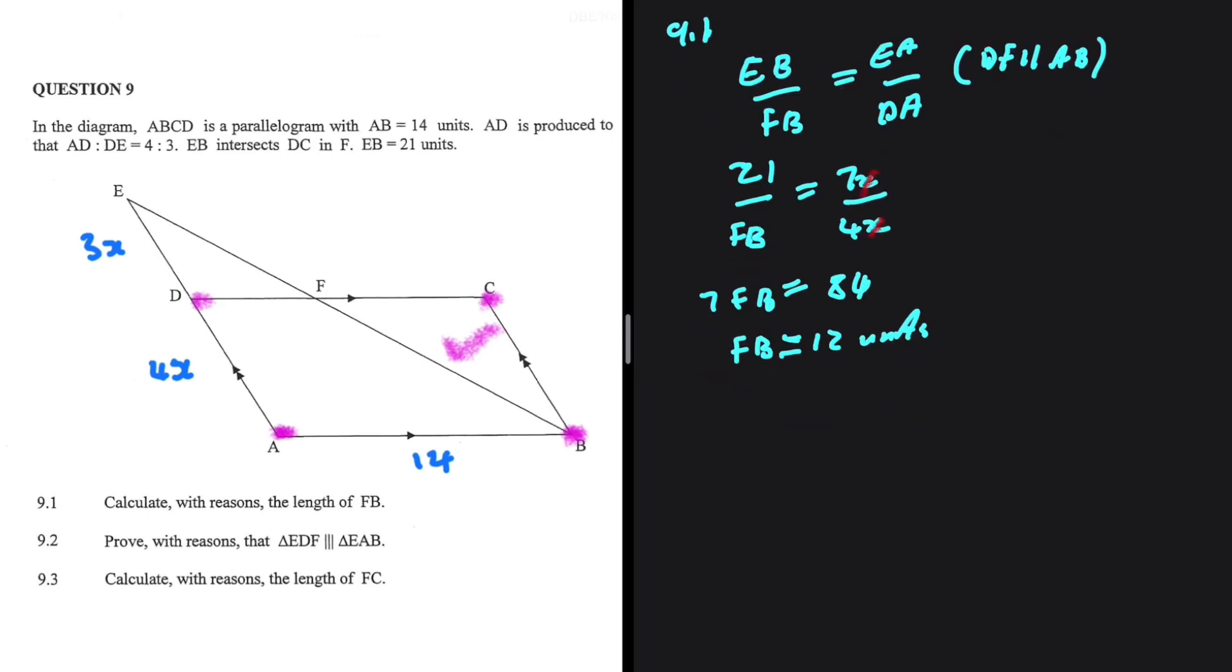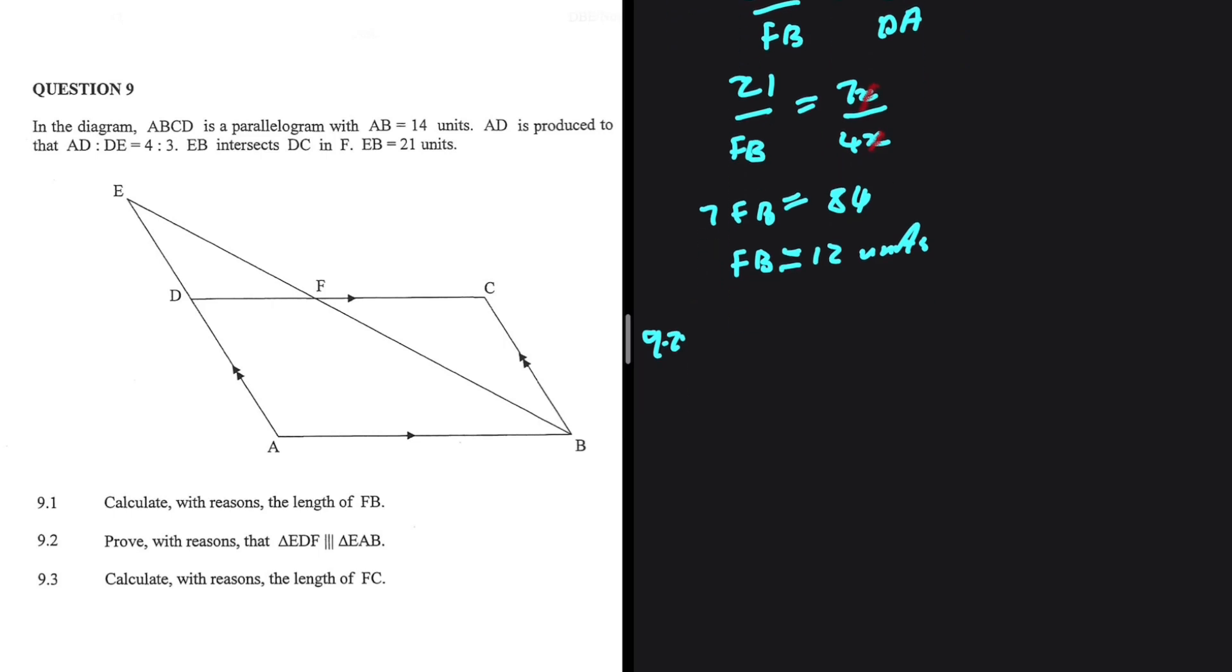Let's get to 9.2 and see if we can prove given reasons that triangle EDF is similar to triangle EAB. The way these triangles are named, the angles, they follow a certain order. Let me show you what I'm talking about. We have triangle EDF and triangle EAB.